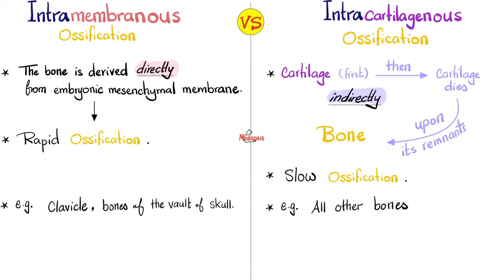Intramembranous — what's the deal? The bone is derived directly from embryonic mesenchymal membrane. Where did that come from? From the mesoderm. So the mesoderm will give you bone directly, which means rapid ossification, such as the clavicle and the bones of the vault of your skull.